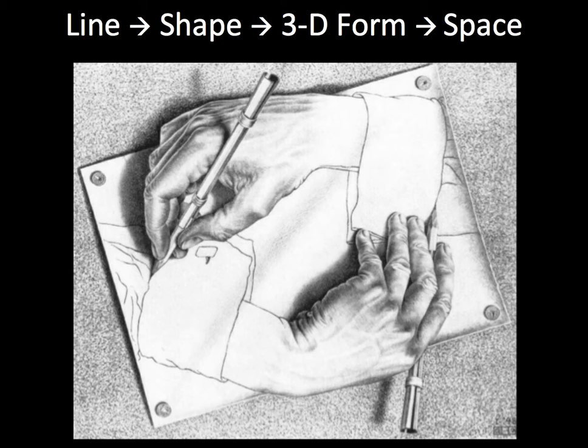You can see in this example by MC Escher, a print of his—I believe this one is called Drawing Hands. You can see as the pencil hits the paper that he's using that line, which is our first art element. And if you follow that line, that line makes the cuff of the shirt and makes the shape of the hand.